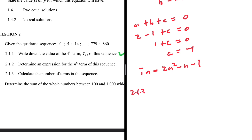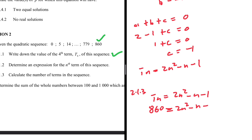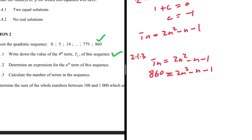Question 2.1.3: calculate the number of terms in the sequence, where the last term has a value of 860. Since tn = 2n² - n - 1, we substitute 860 in place of tn and solve for n, which will tell us how many terms are in the sequence.